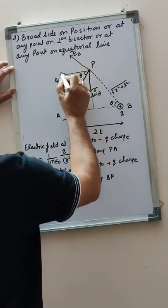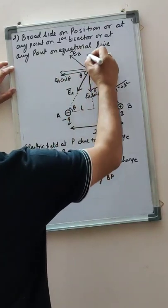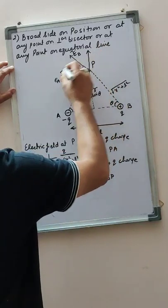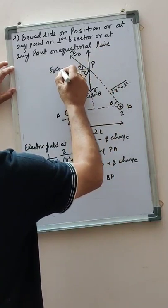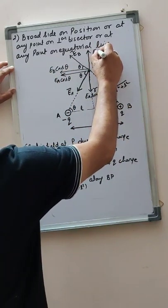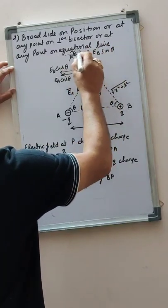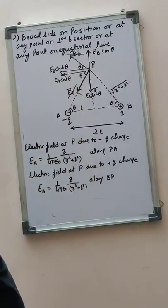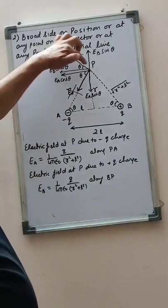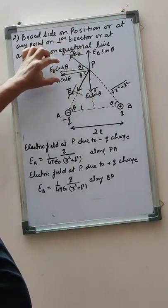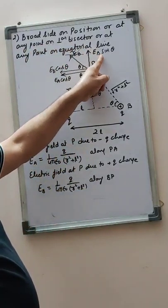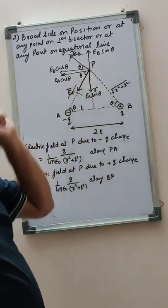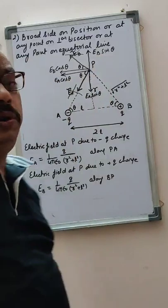Similarly, resolve Eb: one component in this direction and another in this direction. This theta, this theta — so this will be Eb cos theta and this is Eb sin theta. Now, along the x-axis these two components are in the same direction so they will add up, whereas along the y-axis these two are oppositely directed and they are equal, so they will cancel each other.